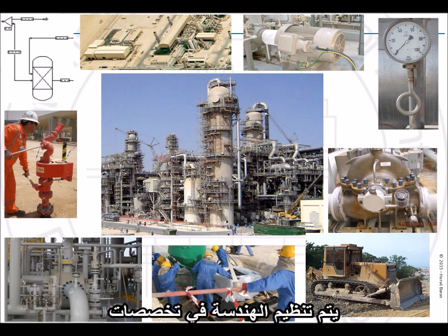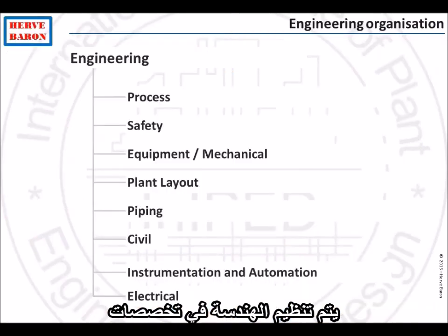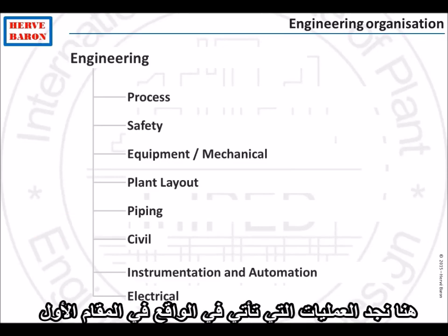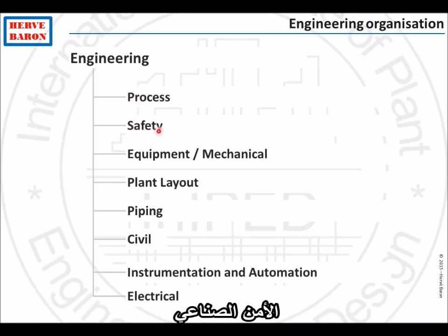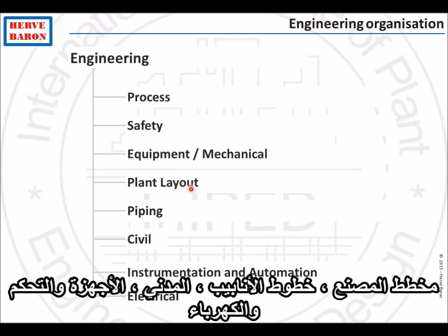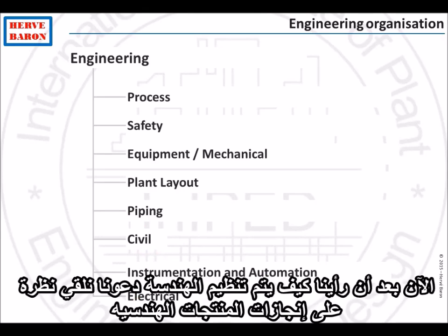Last but not least is safety — the facility has to be designed in a safe way so that it can handle emergency situations. Engineering is organized in disciplines, and the traditional disciplines are: process, which comes first; safety; equipment mechanical, in charge of machinery, pressure vessels, heat exchangers, rotating equipment, fired equipment such as boilers, turbines and so forth; plant layout; piping; civil; instrumentation and control; and electrical.